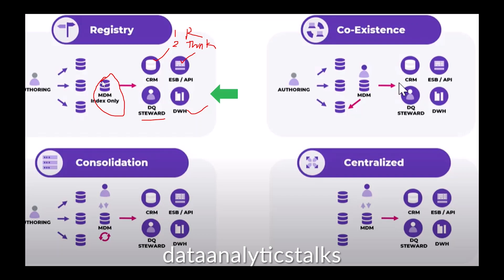The advantage of the registry architecture style is the lower time and cost required to implement an MDM solution, as well as reduced impact on the source data systems. The key disadvantage is performance — the time required for the registry hub to aggregate data from multiple source systems and provide a complete master data record is a big challenge.